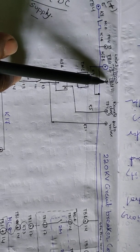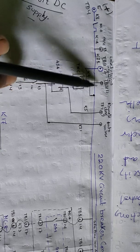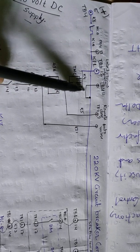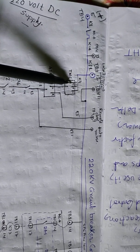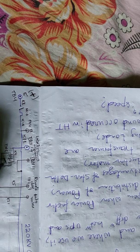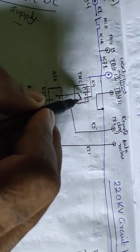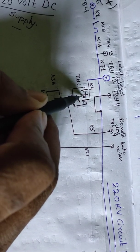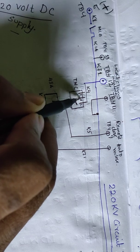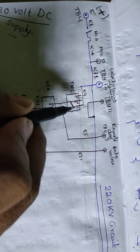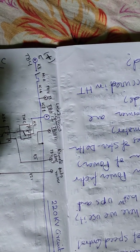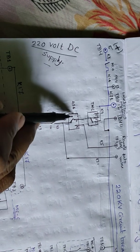This is the local close path, where the DC supply is coming from here and this DC supply is connected to this point. The supply goes through from this point to this point, and the DC supply is at the close terminal. If we want to close this circuit breaker, we have to turn the pistol grip mechanism TNC switch to the close position, and then the DC will be through.